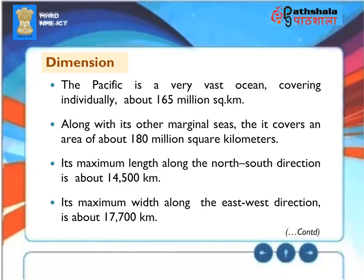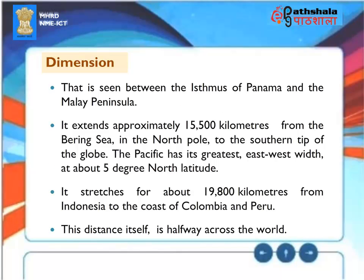Dimension: The Pacific is a very vast ocean covering individually about 165 million square kilometers. Along with its marginal seas, it covers an area of about 180 million square kilometers. Its maximum length along the north-south direction is about 14,500 kilometers, and its maximum width along the east-west direction is about 17,700 kilometers, seen between the Isthmus of Panama and the Malay Peninsula. It extends approximately 15,500 kilometers from the Bering Sea in the north to the southern tip of the globe. The Pacific has its greatest east-west width at about 5 degrees north latitude.